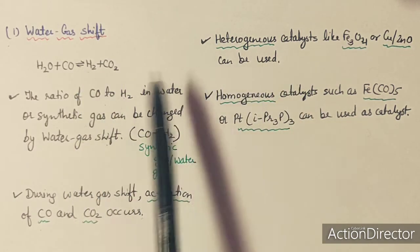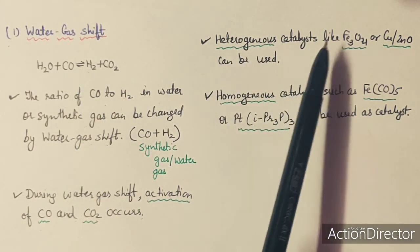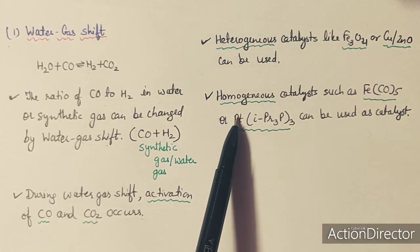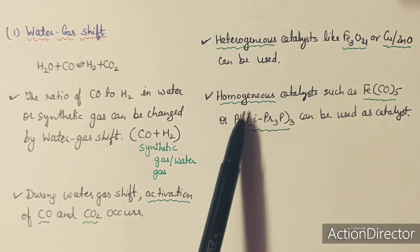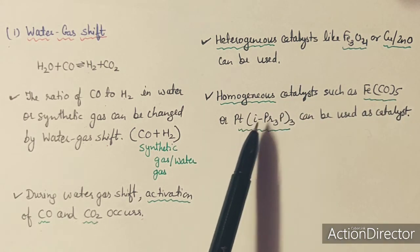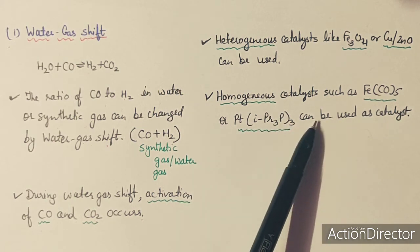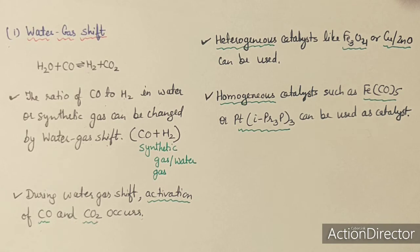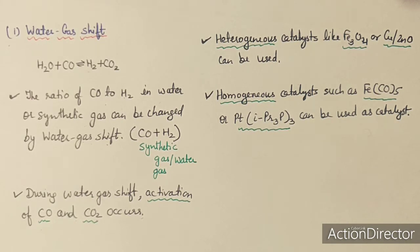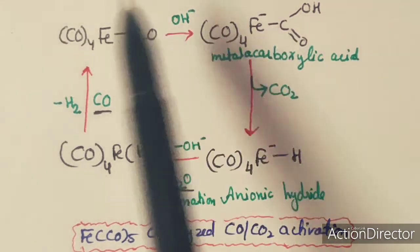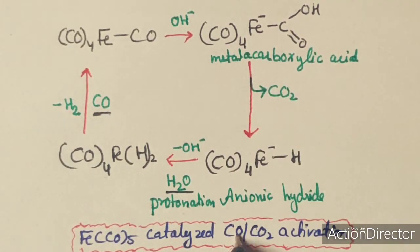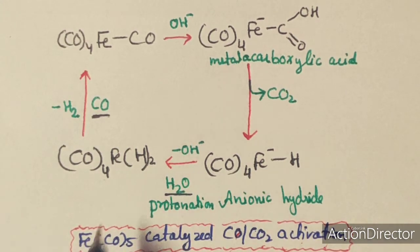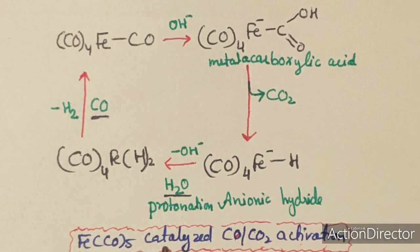For this activation, heterogeneous catalysts like Fe3O4 or CuZnO can be used. The homogeneous catalysts that can be used are Fe(CO)5 or platinum-based catalysts for the water gas shift reaction. I am now showing the mechanism of water gas shift — the catalytic cycle of CO and CO2 activation — catalyzed by Fe(CO)5.